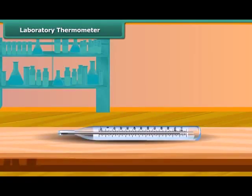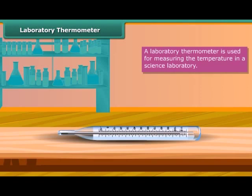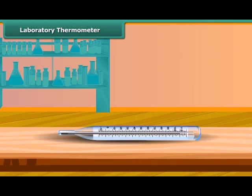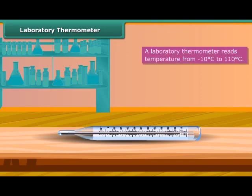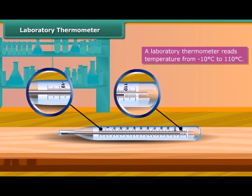Let us now discuss the laboratory thermometer. A laboratory thermometer is used for measuring temperature in a science laboratory. It is similar to a clinical thermometer but is long and narrow. A laboratory thermometer reads temperature from minus 10°C to 110°C.